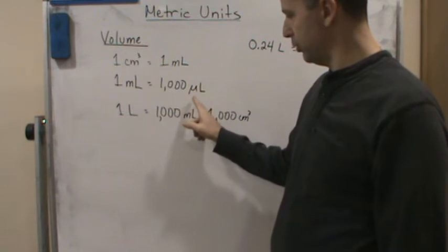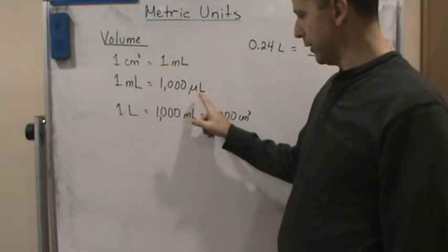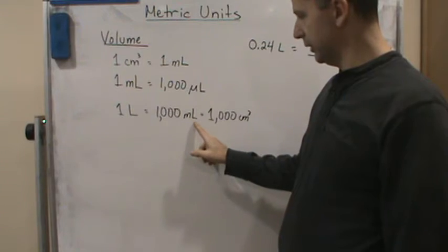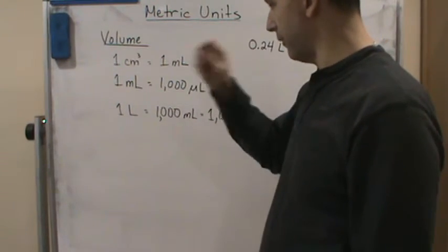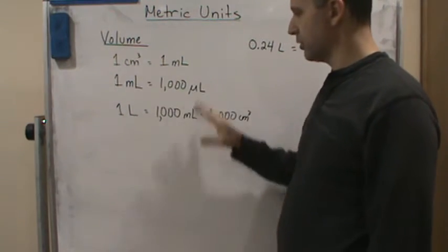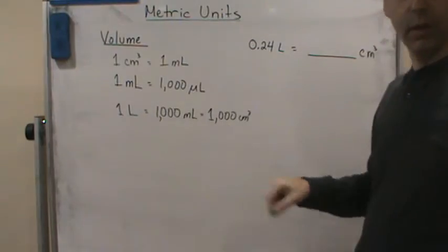Again, all you have to do is know the prefixes, right? So this is micro, the Greek letter mu, it means microliter. This is milliliter, and then obviously cubic centimeters. Make sure you know these. It'll make things a lot easier.